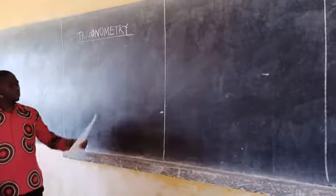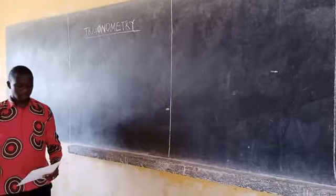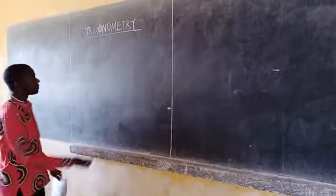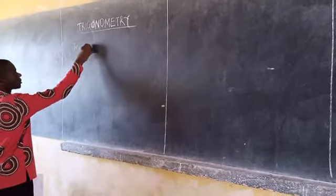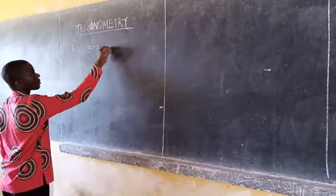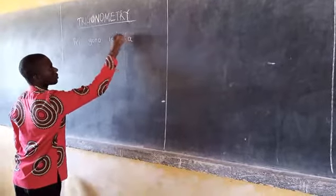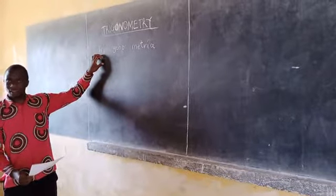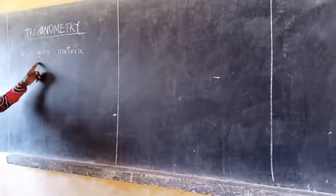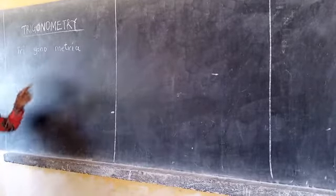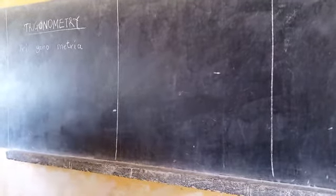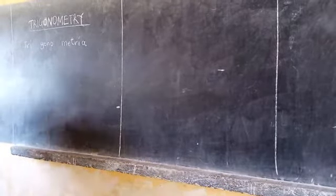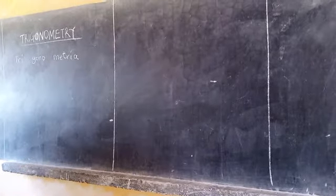The term trigonometry comes from the Greek words. This word simply means trigonometry, we are familiar with this word, gonometria, it has much to do with measurement. So trigonometry, three angle measurement, that's where we get the word trigonometry.